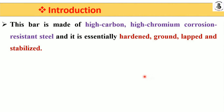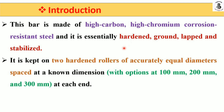All sine bars are made with high-grade steel materials — high carbon, high chromium — which provides corrosion resistance. They are hardened, ground, lapped, and stabilized, giving them a long life and enabling accurate measurement. The sine bar is kept onto two hardened rollers, accurately and equally spaced, with the center-to-center distance being 100 mm, 200 mm, or 300 mm.